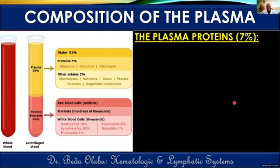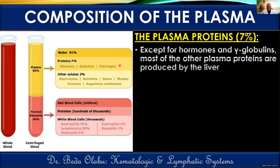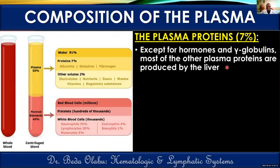The plasma proteins occupy about 7% of plasma. Generally, plasma proteins largely come from the liver — with the exception of most hormones and gamma globulins. Gamma globulins are produced by plasma cells, a specific type of white blood cell, and are useful as part of antibodies. Other than gamma globulins and hormones, the remaining plasma proteins largely come from the liver.